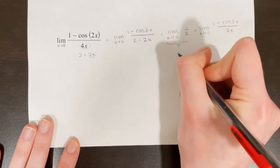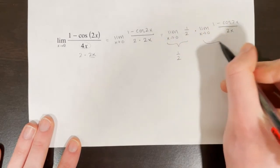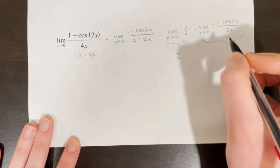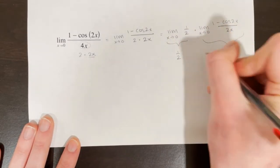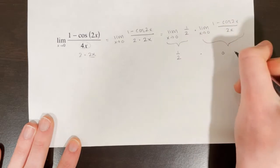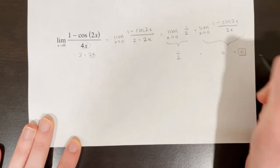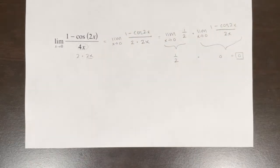Now it's time to split: the limit as x approaches 0 of one-half, times the limit as x approaches 0 of (1 minus cos(2x)) over 2x. This is one-half. From my identities, the second limit is 0. One-half times 0 is 0, and that's my limit.